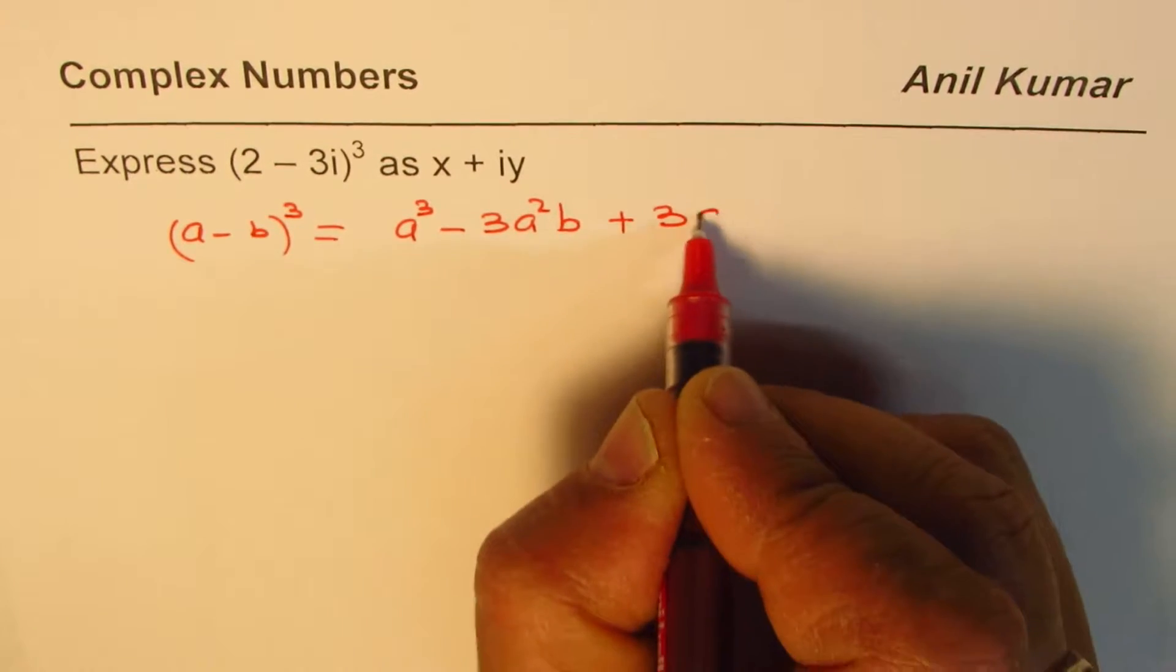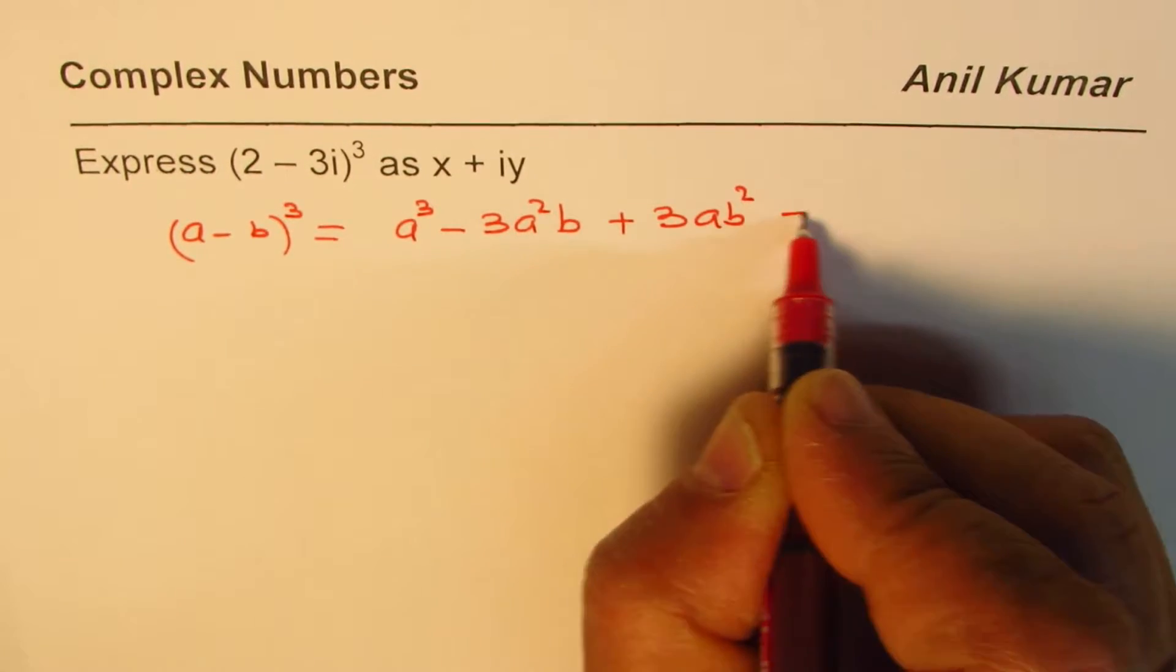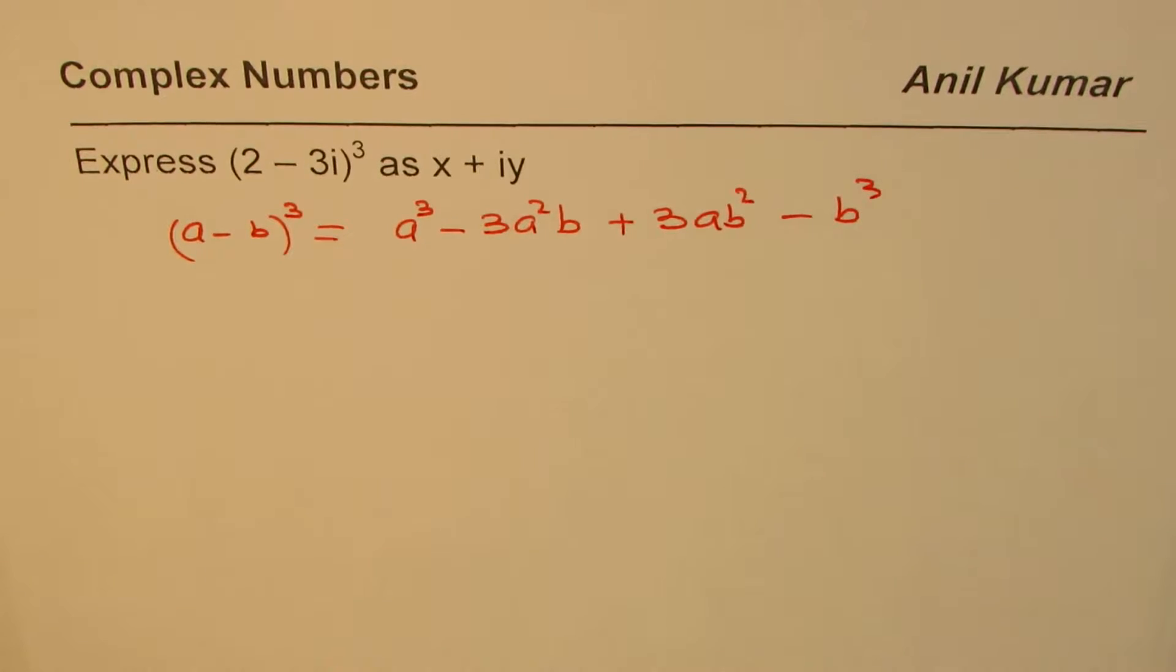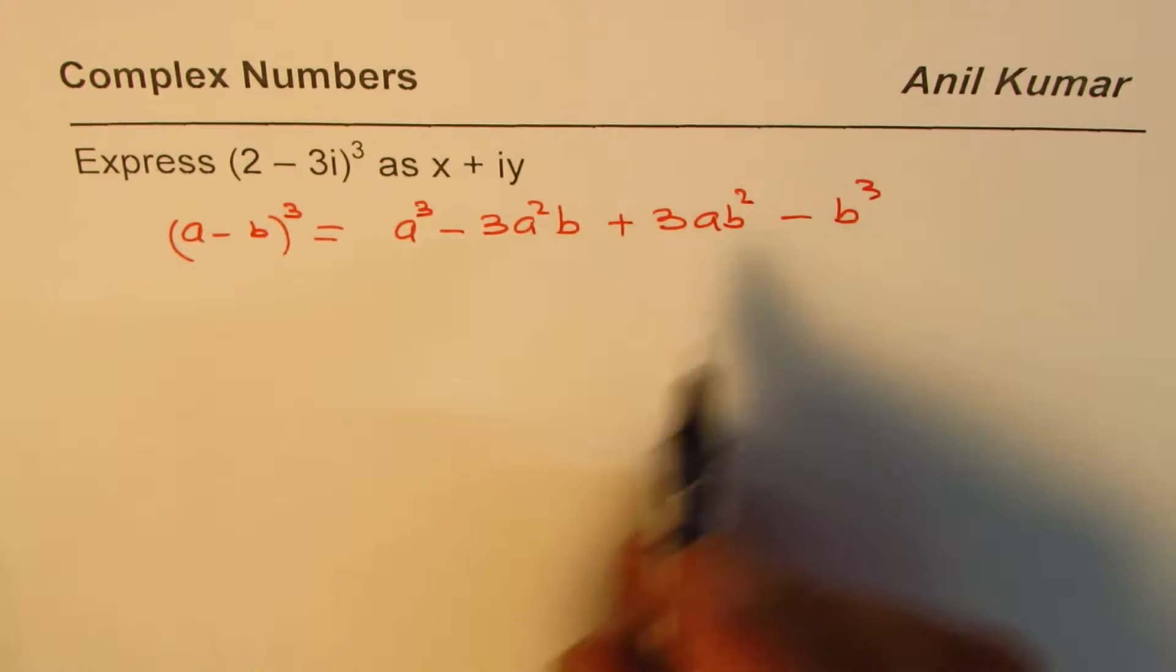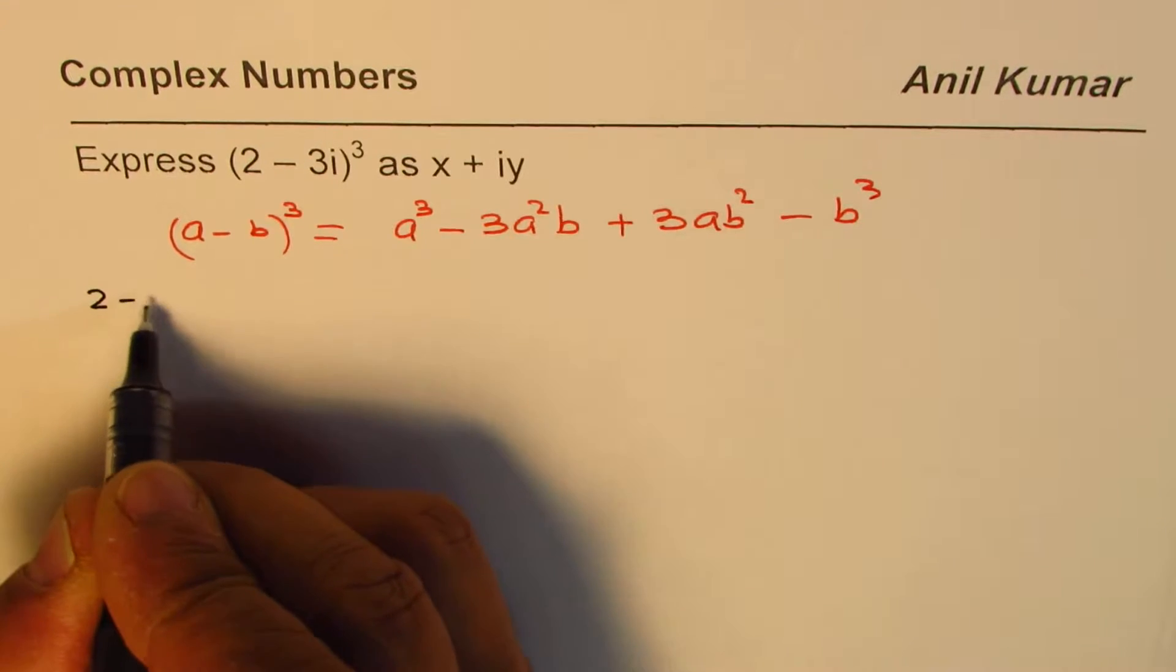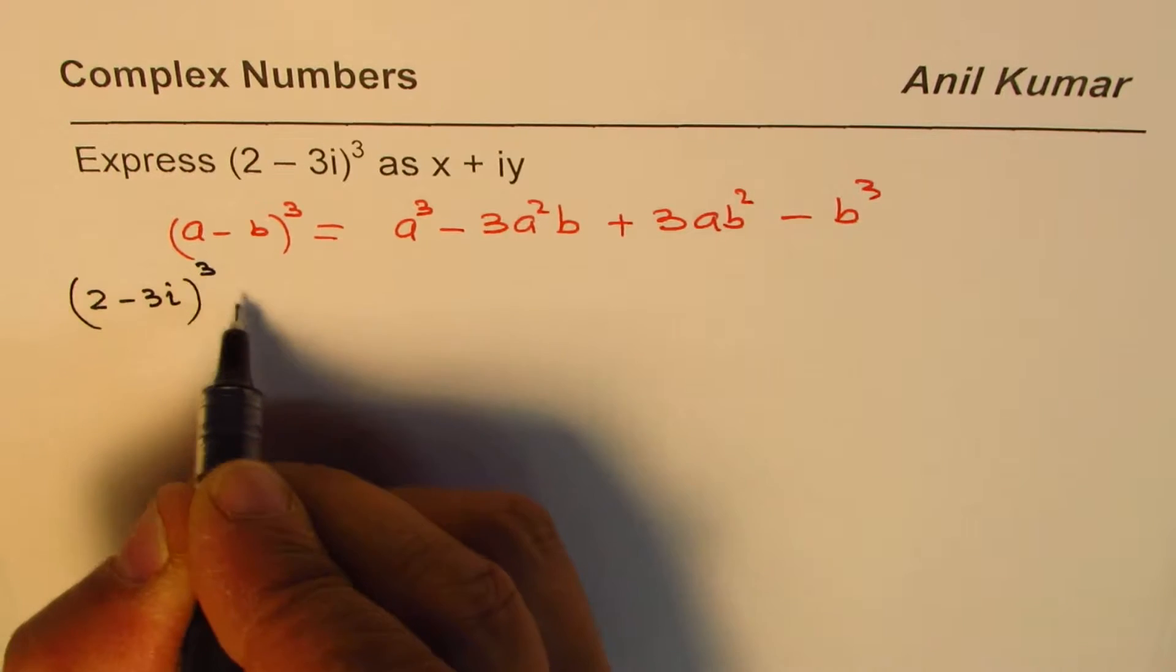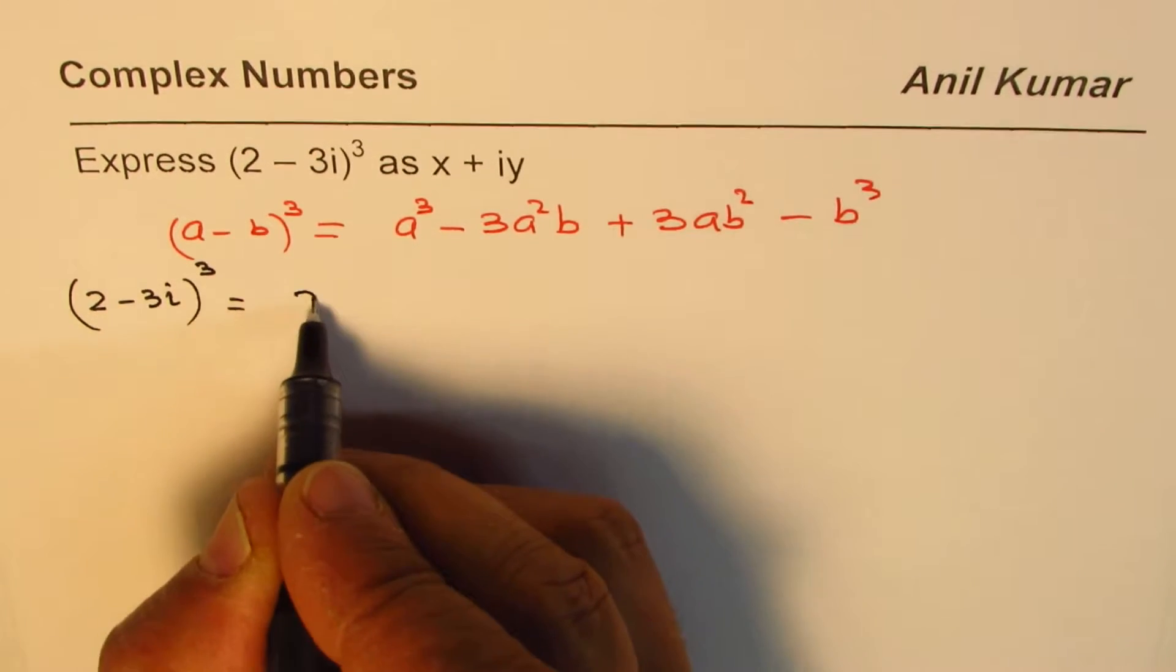We'll apply this formula to expand and then simplify. So we have (2 - 3i)³ equals 2³ minus 3 times 2² times 3i.